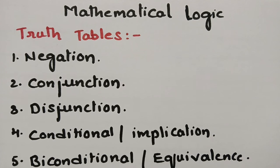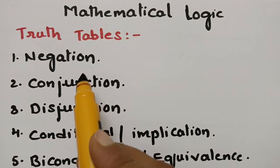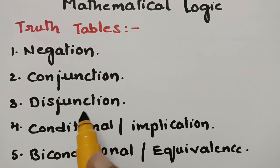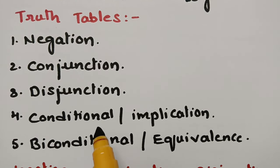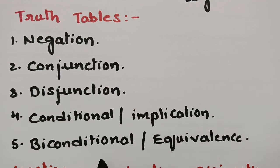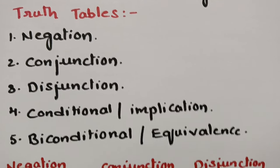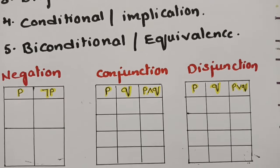Today's topic is Mathematical Logic. The truth tables here are very familiar from your grade 10th. The first things are: negation, conjunction, disjunction, conditional statements — otherwise called implication — and biconditional statements — otherwise called equivalence. How do we draw these truth tables?